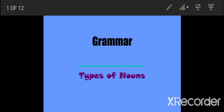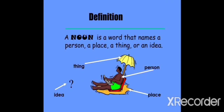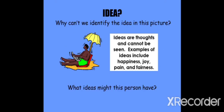In your earlier classes, you might have studied about a noun. So what exactly is a noun? A noun is a word that names a person, a place, a thing or an idea. In simple words, nouns are naming words. Now look at the picture. In this picture, you can see it names a person, a place, a thing and even an idea. But why can't we identify the idea in this picture? Because ideas are thoughts and cannot be seen.